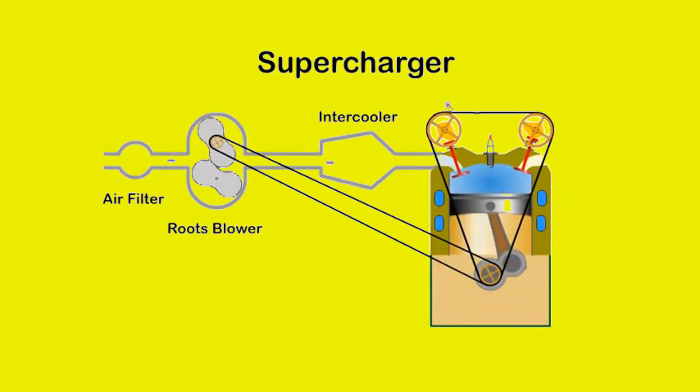On the intake stroke we want to get as much air into the cylinder as possible. Air intake can be improved by pressurizing the incoming air with a pump driven by the engine. The pump is called a supercharger and in this case a roots blower is used.